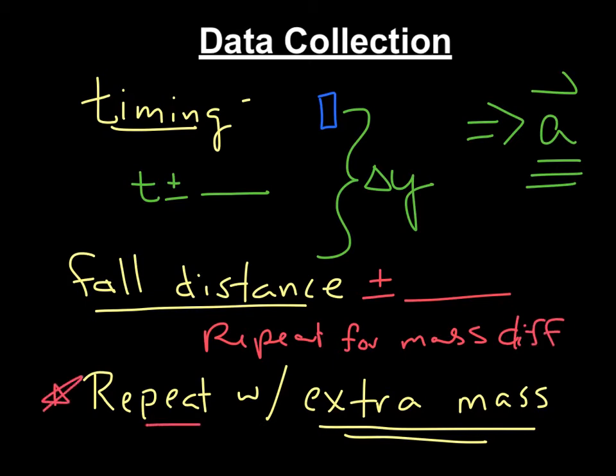Then, after you do that, you will repeat and add the extra masses we've provided. And then you'll do this. So you'll wind up with two graphs. One graph for your original masses, and one with the extra masses provided.